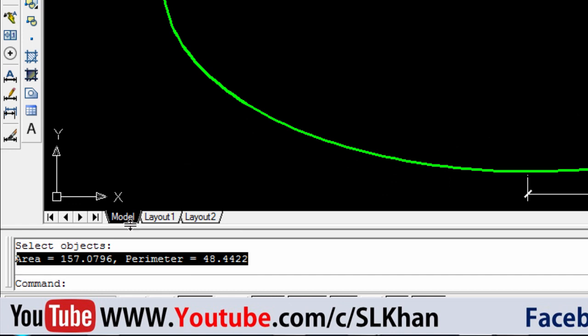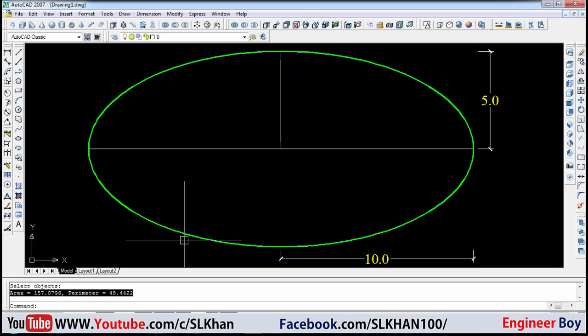Of this ellipse, it says 48.44 units is going to be the perimeter of this guy, and of course we got the same thing in the calculation. That means the formula we were working with is correct.